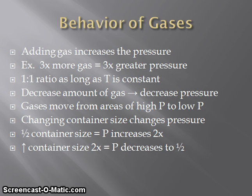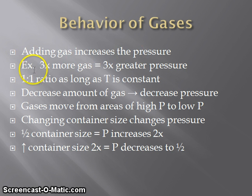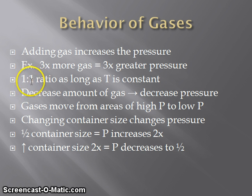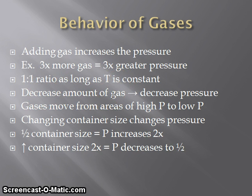Let's discuss the behavior of gases. If we add more gas to a container, this is going to cause an increase in the pressure inside of that container. For example, if we triple the amount of gas inside a container, this will cause the pressure to be increased by a factor of 3. This ratio is always going to be 1 to 1 as long as we're holding temperature constant. If we decrease the amount of gas particles in a container, this is going to lead to a decrease in the pressure.